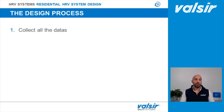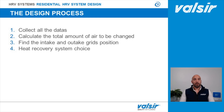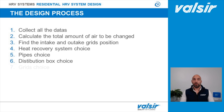Let's list what is needed to design an HRV system. First, collect all the data: the surface of the building, its geometry, structure, and ceiling height. Then calculate the total amount of air to be changed using the 0.5 ratio. Next, find the right position for the intake and outtake grids, choose the heat recovery unit, the right pipes, the right distribution box, and then select the grids — the only part actually visible in the heat recovery ventilation system. Finally, make a check to see if everything is correct.